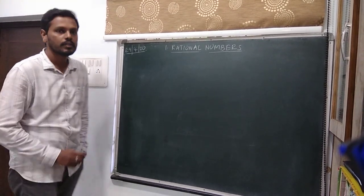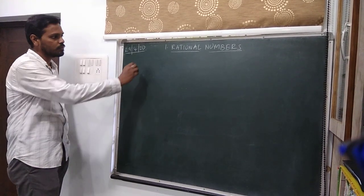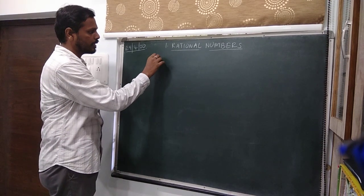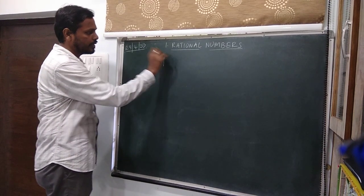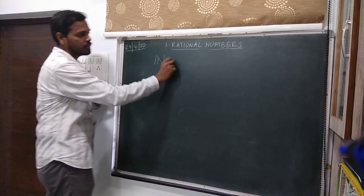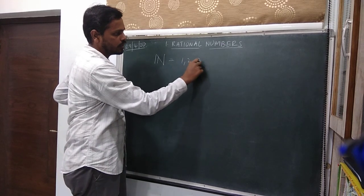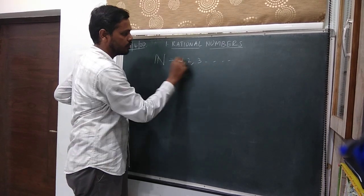We start with the first collection of numbers, which is your natural numbers. We denote natural numbers with N, and these are the numbers 1, 2, 3 and so on.